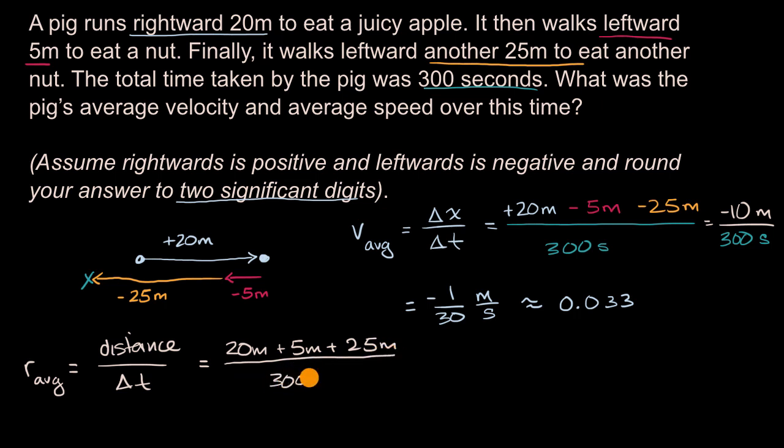Divided by 300 seconds. And so this is going to be equal to 50 meters, 50 meters over 300 seconds, which is equal to 5 over 30, which is equal to 1/6th of a meter per second.